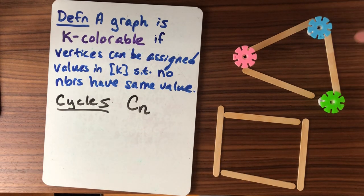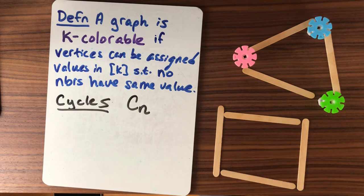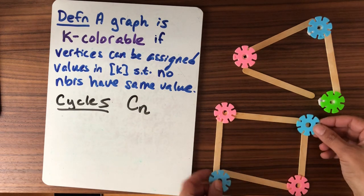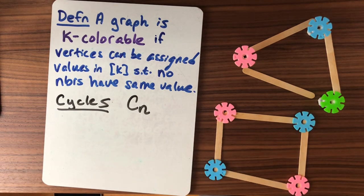So we needed three colors to color a triangle. But what do we need to color a square? Well, previously we'd use three colors there too, but we could actually do it with just two colors. So that's kind of interesting.